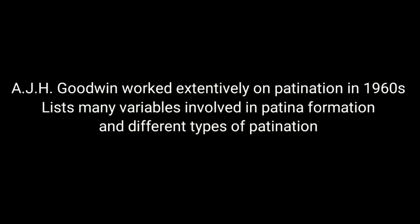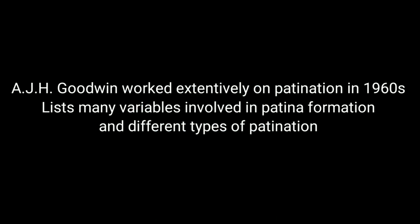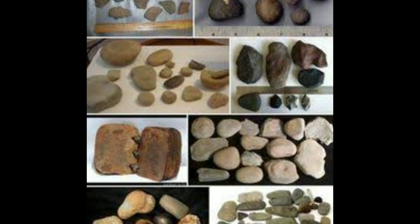A.J.H. Goodwin, who worked extensively on patination in 1960, listed many variables involved in patina formation, as well as different types of patination that can be used fruitfully for tools from stratified deposits. The different types of tools from river gravels and terraces of rivers or lakes can be differentiated by the relative amount of patina, on the basis of which relative ages can be assigned to the artifacts.